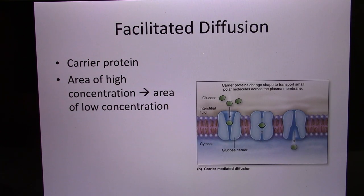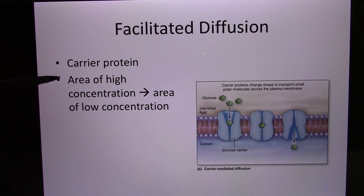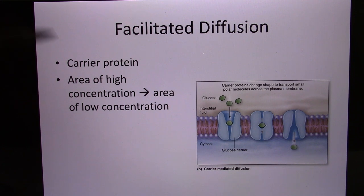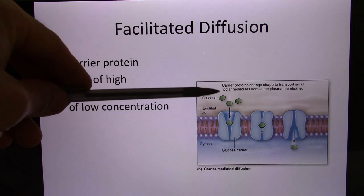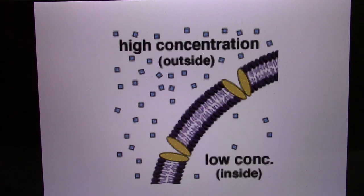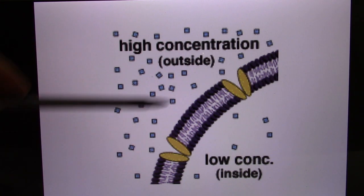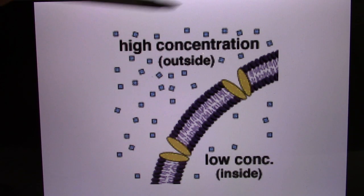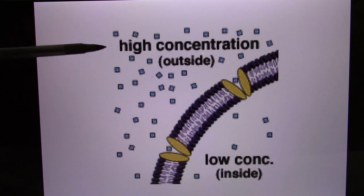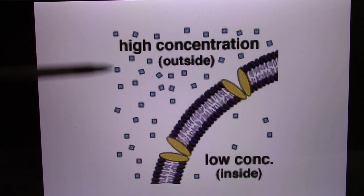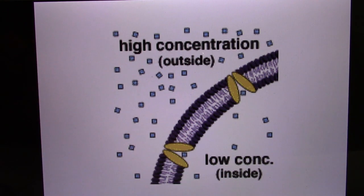We start with facilitated diffusion — the movement of molecules from high concentration to low concentration area. The glucose carrier is an example: it moves blood sugar. The sugar stays in your blood — that's blood sugar — and it moves from high to low.